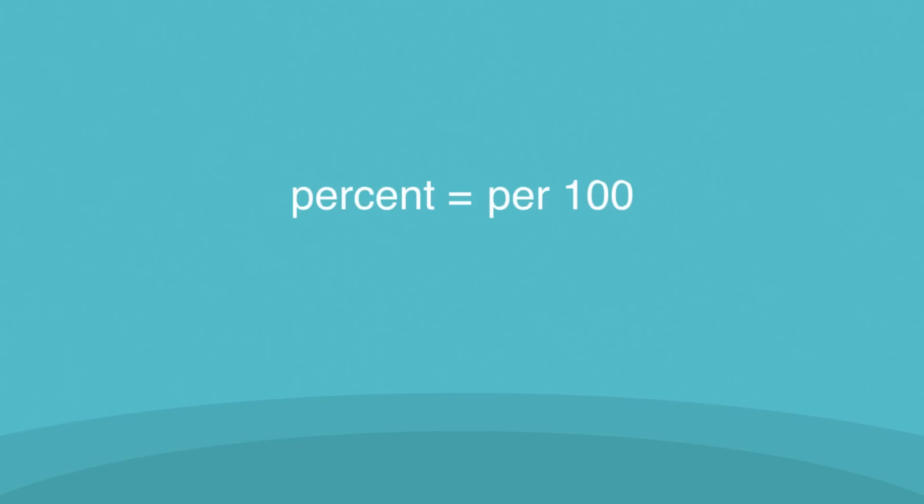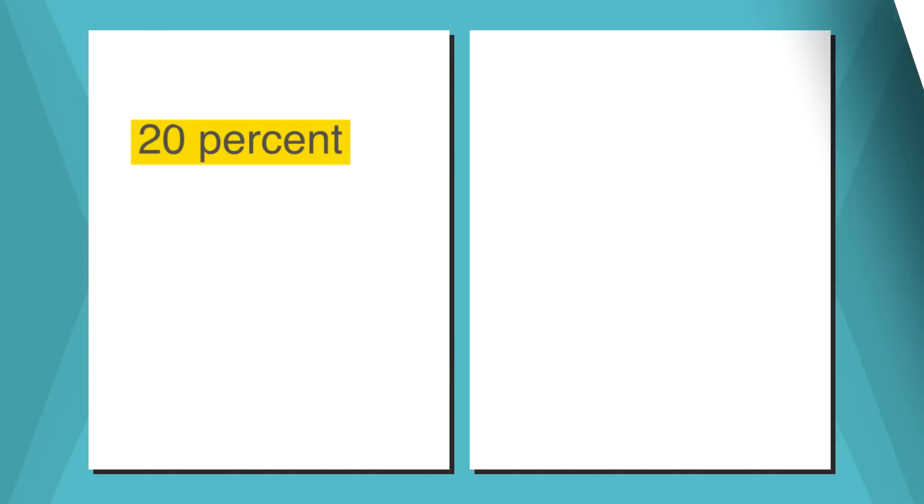But first, it might be helpful to know what the word percent actually means. The word percent literally means per 100. For example, 20% can be expressed as 20 per 100. We can show this relationship as 20 over 100.